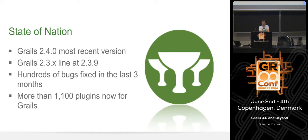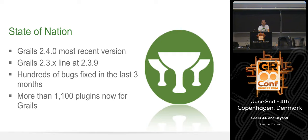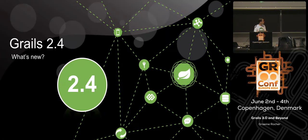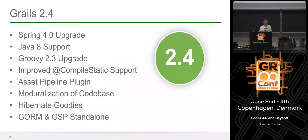The plugin community continues to be really active — there are now 1,100 plugins for Grails, and it remains a super exciting area. So, who here has tried Grails 2.4? A few hands. Who's using 2.3? A lot of hands — that's good. And 2.2? A few hands. 2.1? One. It's good to see that most folks are moving their way up the 2.x line.